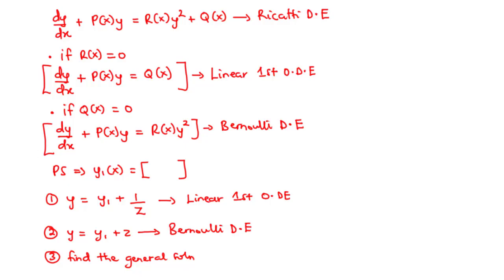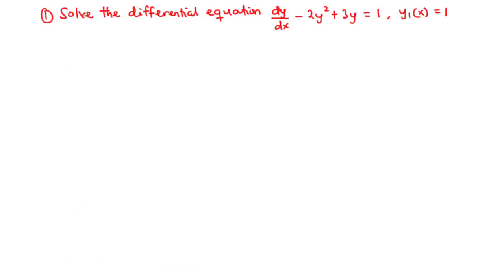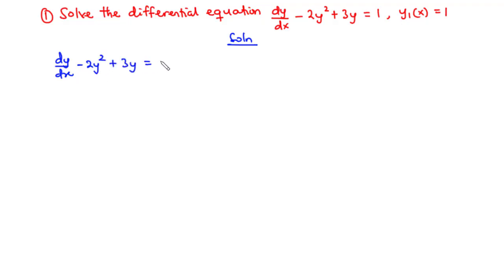We have a question here. We are asked to solve the differential equation dy/dx - 2y² + 3y = 1, with particular solution y1(x) = 1. To clearly identify this as a Riccati differential equation, let's transpose the term to the right-hand side.